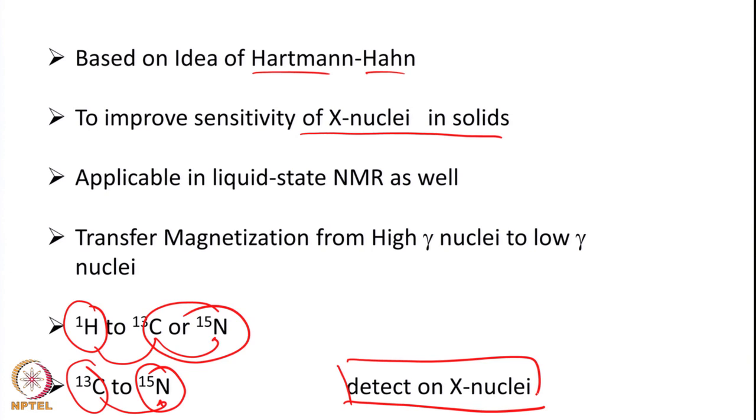Why do we detect on X nuclei in solids? Because dipolar coupling — where two spins are connected through space — is huge in solids, and for proton the dipolar coupling is very, very large. This leads to severe line broadening, so in solids X nuclei are generally detected. Since X nuclei are detected, it is imperative to enhance their signal by transferring polarization from more sensitive nuclei such as protons to less sensitive ones such as carbon or nitrogen.